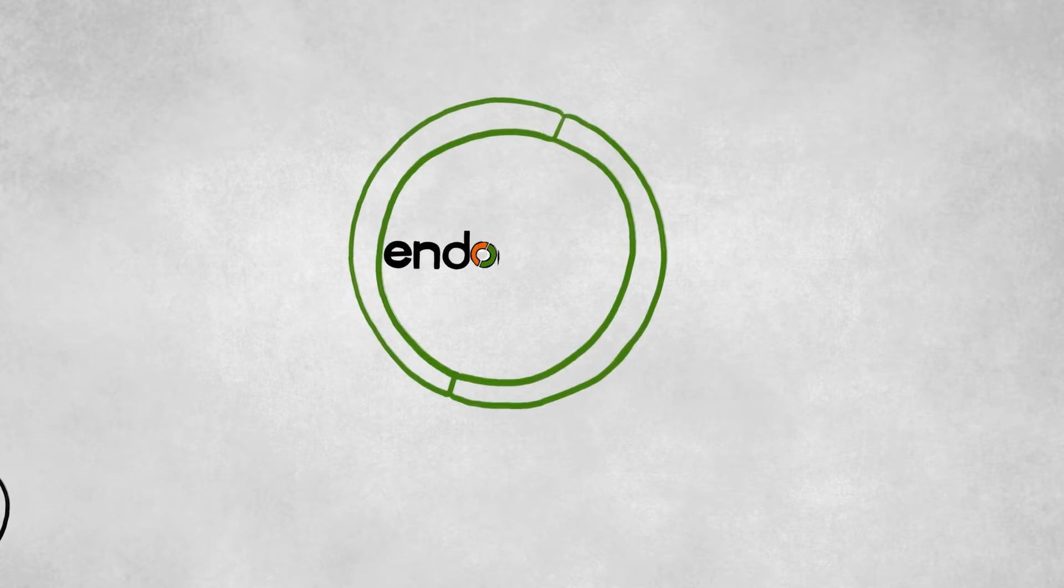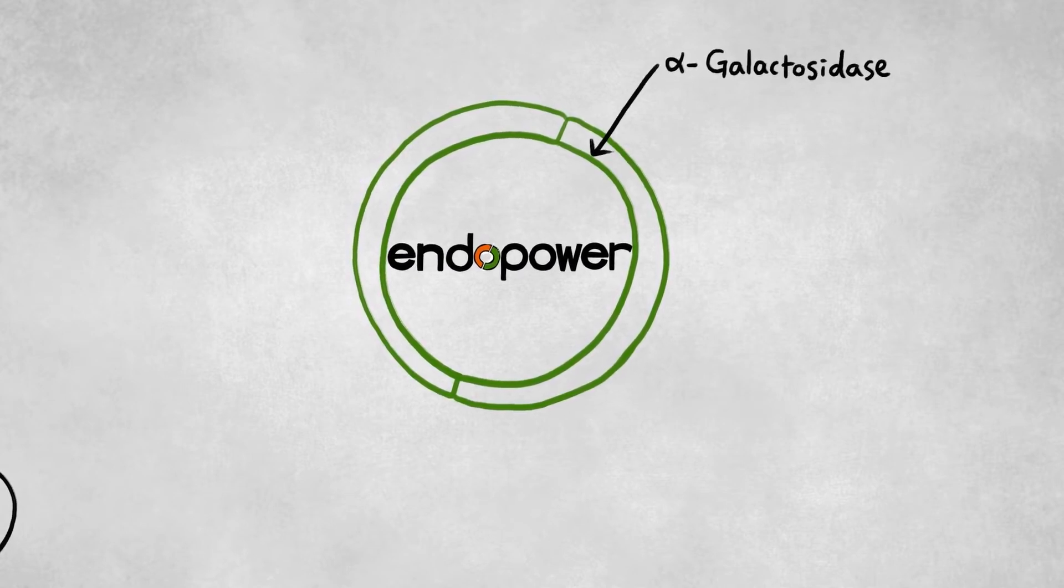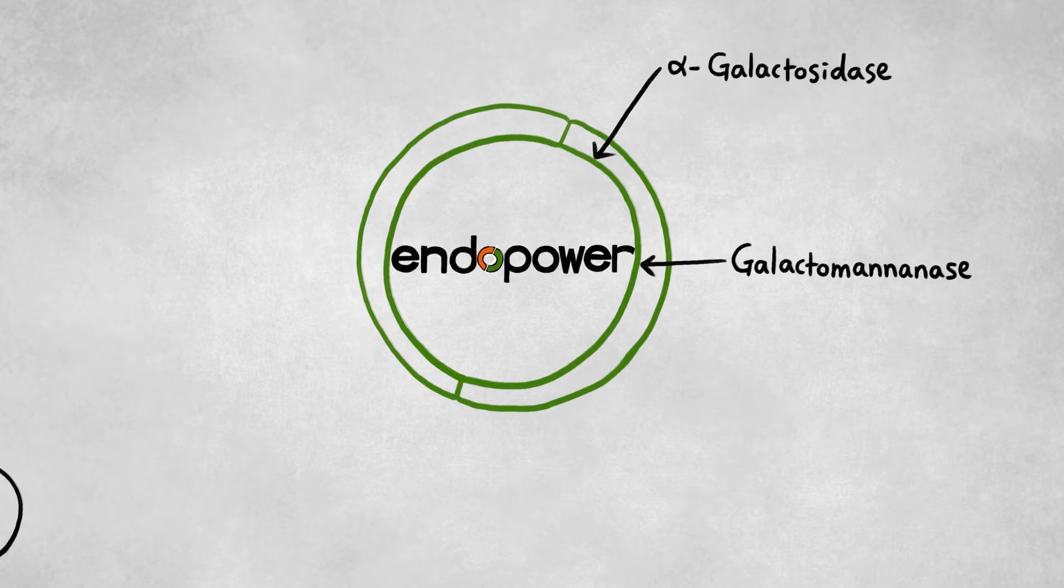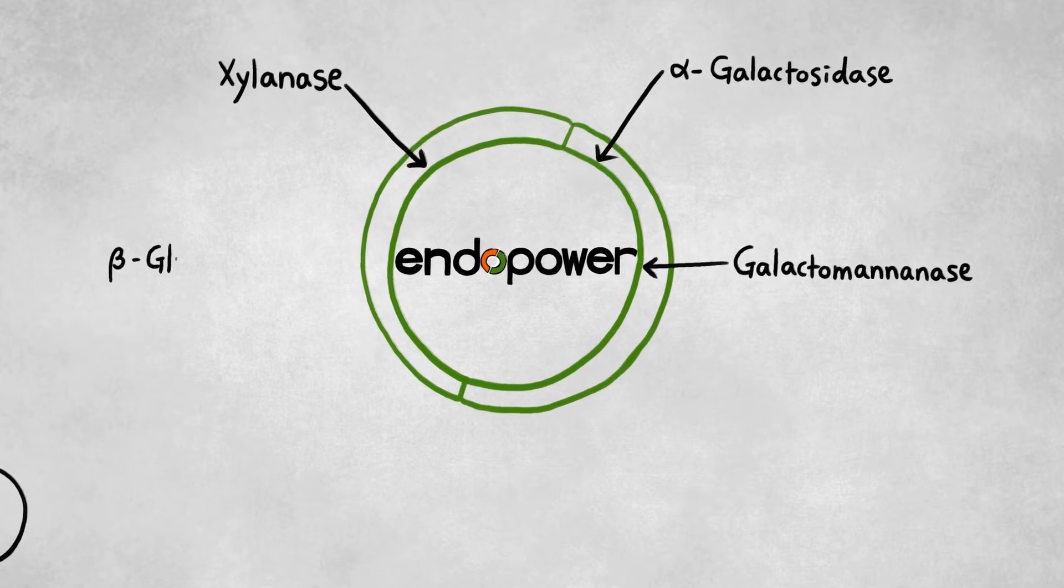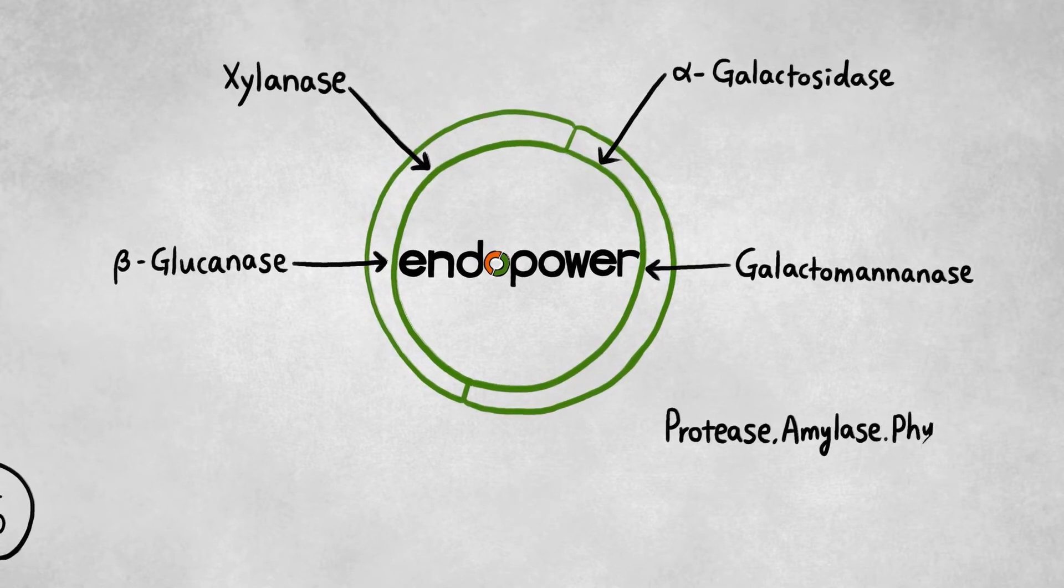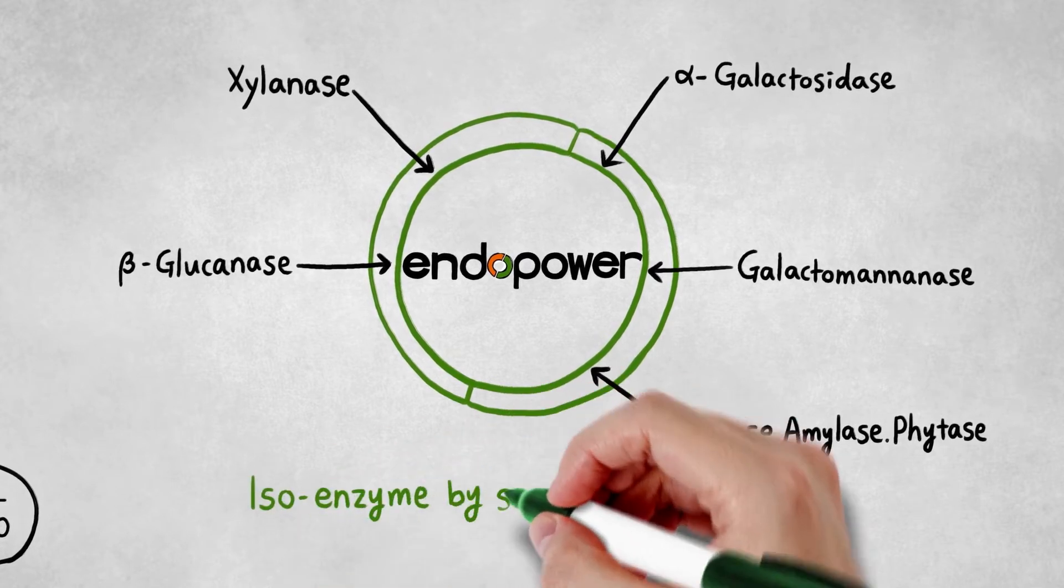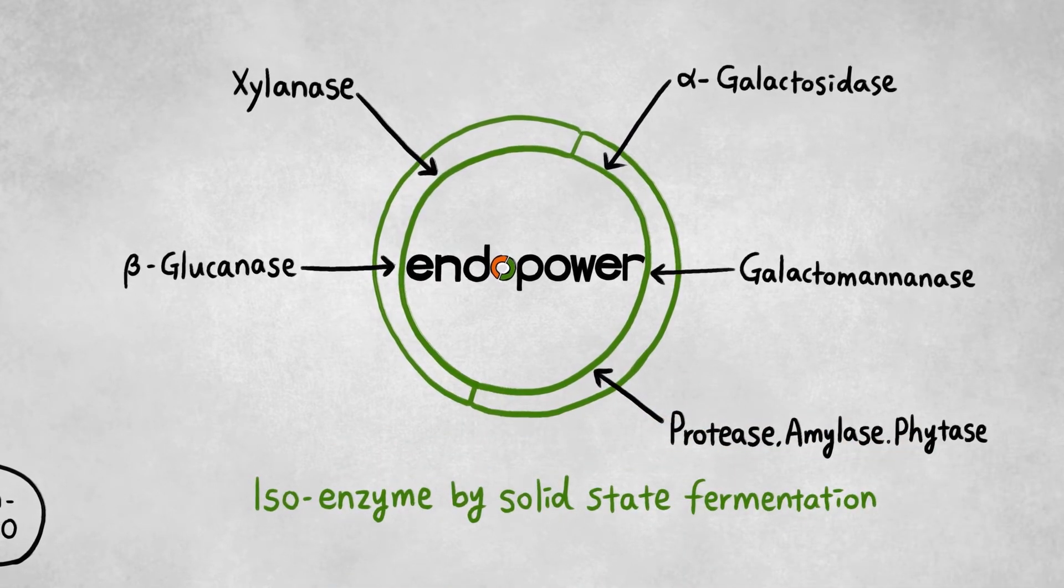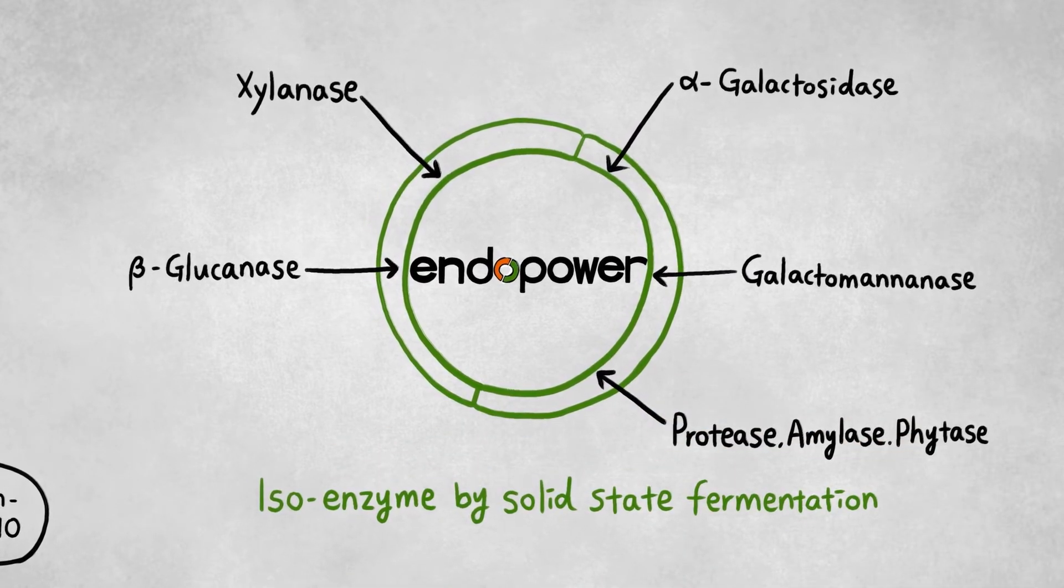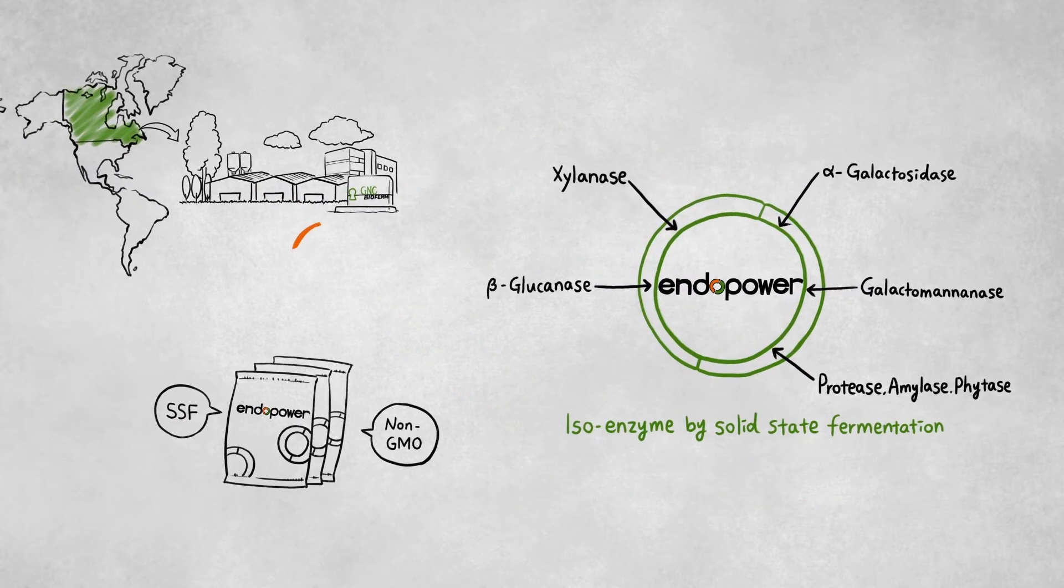In addition, EndoPower contains mainly alpha-galactosidase, galactomananase, xylanase, beta-glucanase, and other useful enzymes. All of these enzymes can specifically target various non-starch polysaccharides, so-called NSPs, in corn-soy diet.